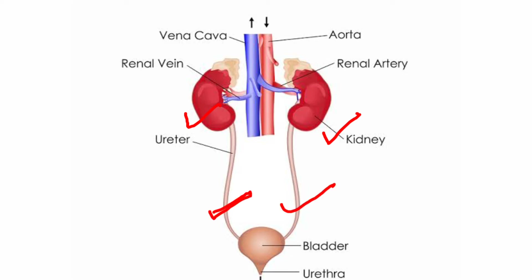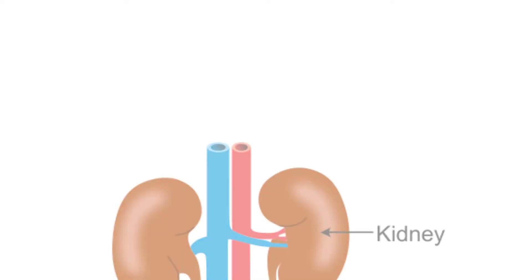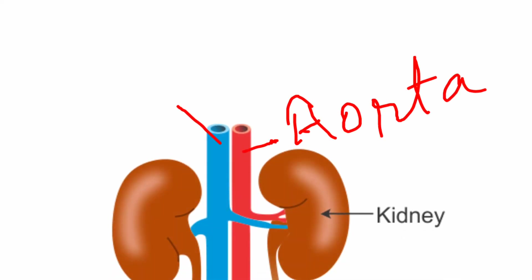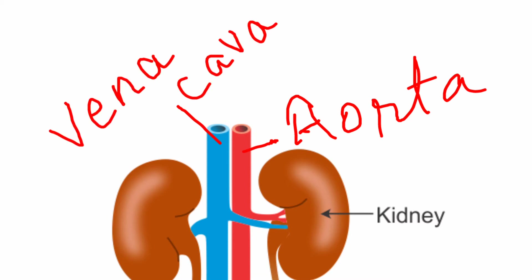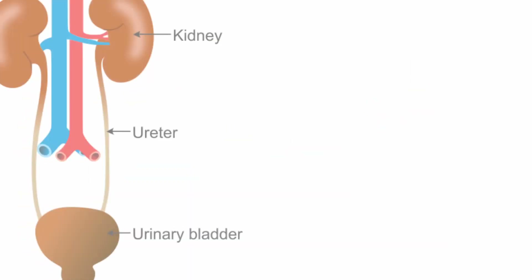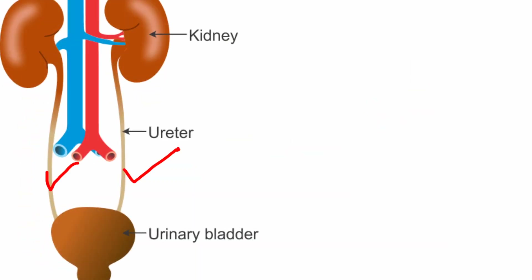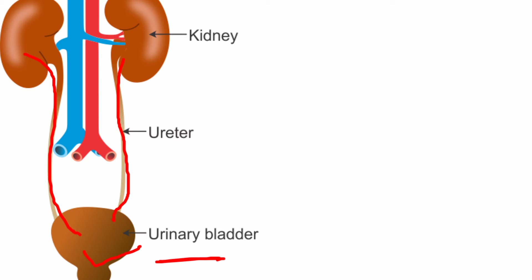As you can see in the picture, this is the kidneys, this is the aorta, and this one is the vena cava, which we already discussed in the previous video. This is the ureter — a pair of ureters that join your kidney to the urinary bladder.